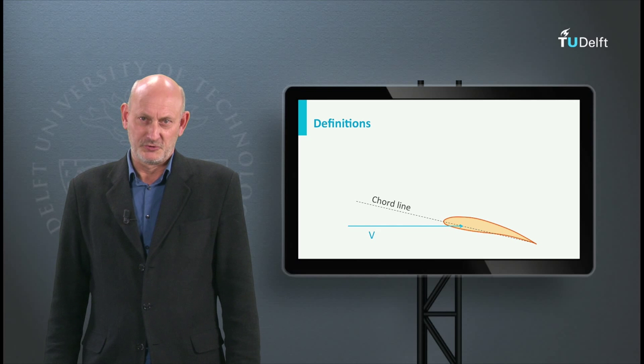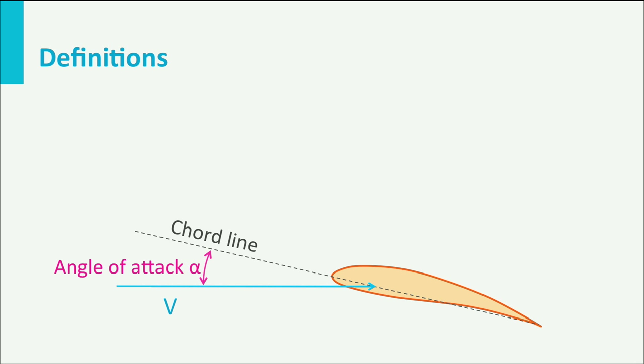Here are a few definitions. The angle between the airfoil chord line and the incoming free stream vector is called the angle of attack. By definition the lift force is perpendicular to the incoming flow vector and the drag is parallel to it. The moment is positive nose up, so when it tries to increase the angle of attack.